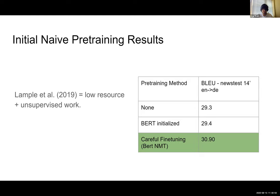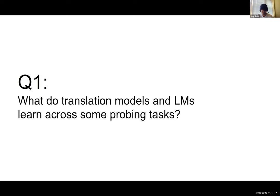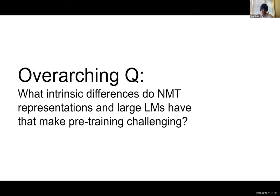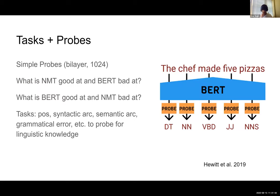The big central question: what intrinsic differences do neural machine translation (bilingual) representations and large monolingual language models have that make this pre-training difficult? To answer this, John and I agreed it's better to look at what translation models' encoders or decoders alone are good at, and what language models alone are good at. If we understand their independent capabilities, maybe we can understand why careful pre-training does or doesn't work. We decided to probe representations across various language model setups and neural machine translation setups.